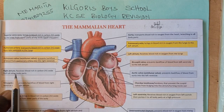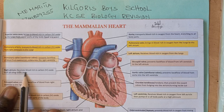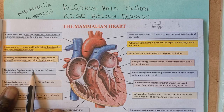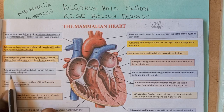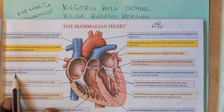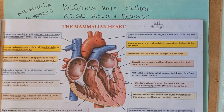We also have the right atrium. The right atrium receives blood rich in carbon dioxide from all other parts of the body.